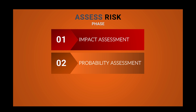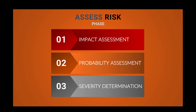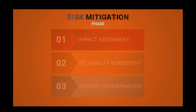Second, Probability Assessment: determine the likelihood or probability of each risk occurring. Analyze historical data, expert judgment, and external factors such as skill levels to gauge the probability accurately. This step helps us understand the chances of the risk materializing. Third, Severity Determination: combine the impact and probability assessments to determine the overall severity of each risk. Assign a severity level to prioritize the risk effectively. This allows us to focus on addressing the risks that have the highest impact and likelihood of occurrence. By following these steps, we can gain valuable insights into the potential risks associated with the architecture development process. Once we have assessed the risks, the next phase is to determine the risk mitigation approach.